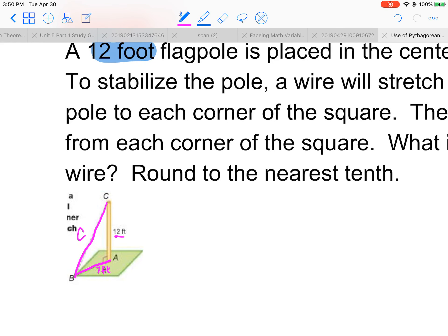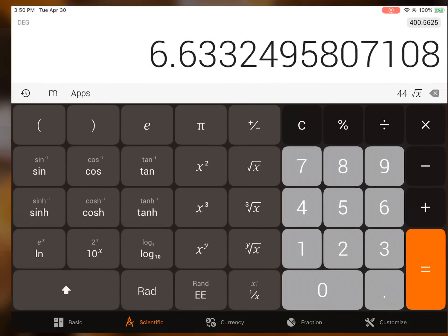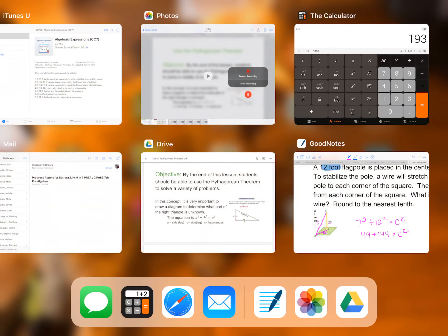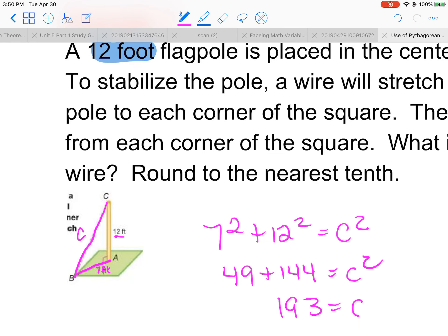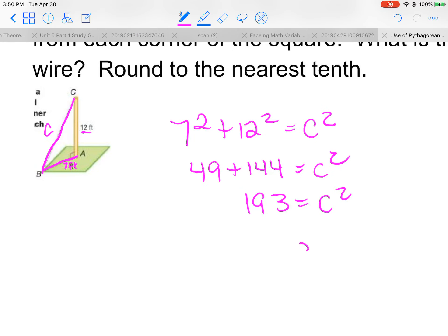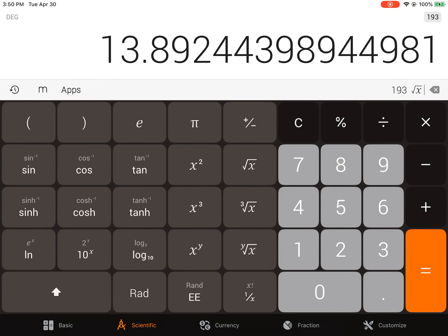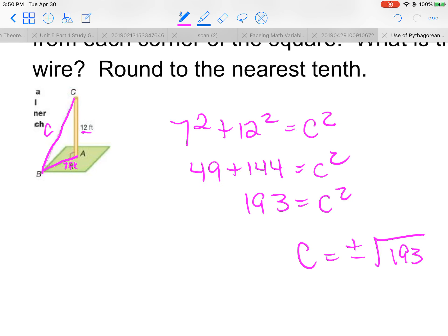What is the length of each wire? And the height is the 12 that they mentioned. So again, we're missing our hypotenuse. So 7 squared plus 12 squared equals C squared. So 49 plus 144 equals C squared. Let's go ahead and do that. 49 plus 144 is 193. So 193 equals C squared.